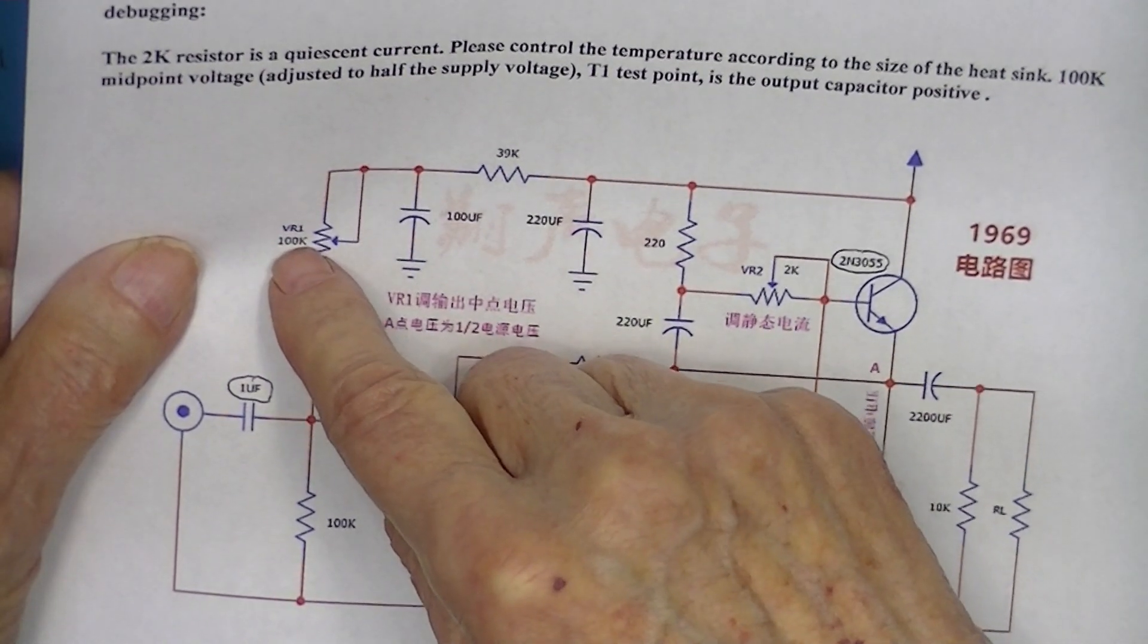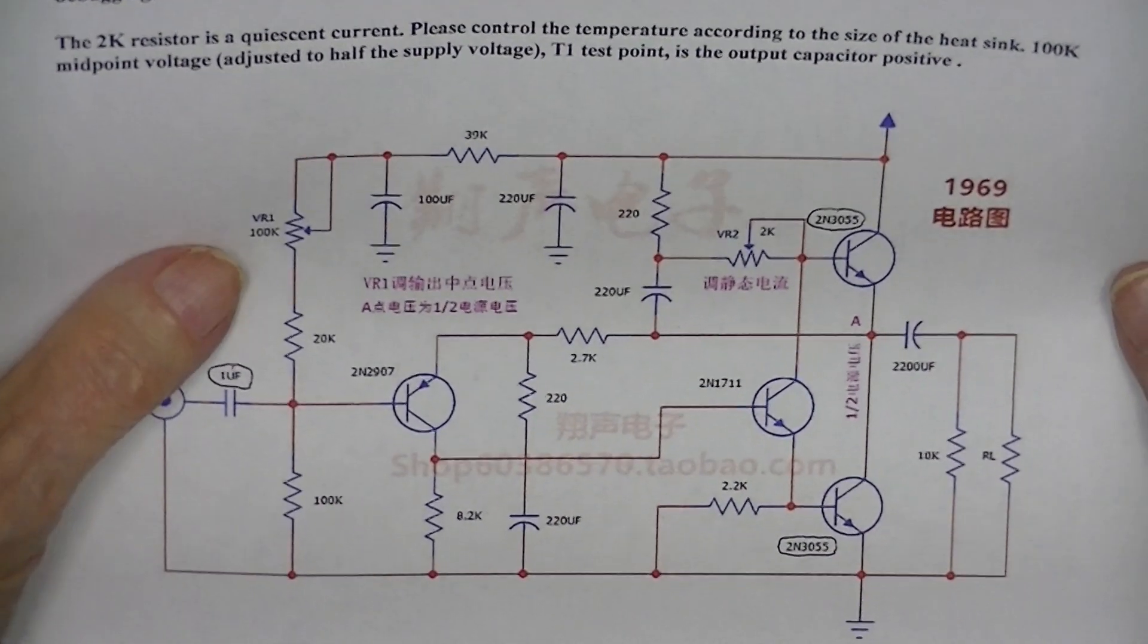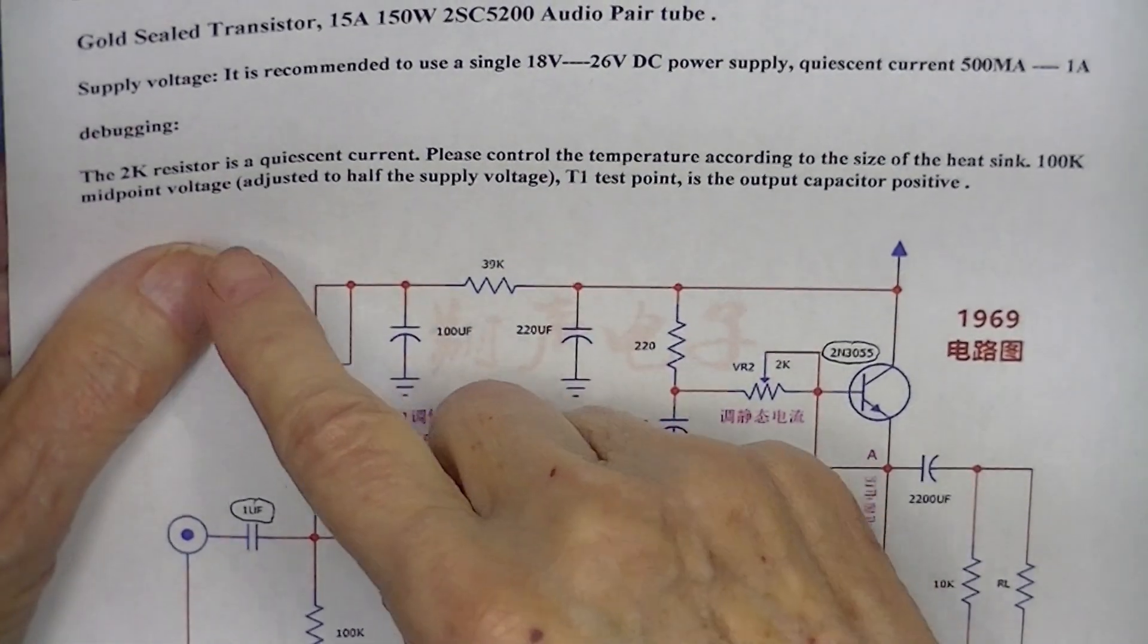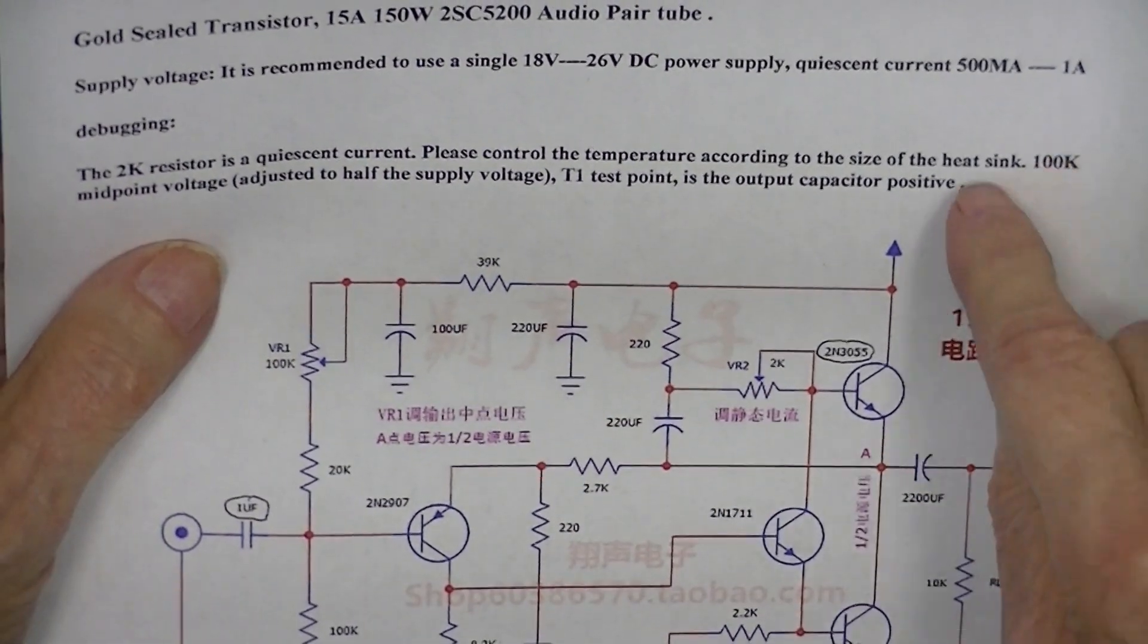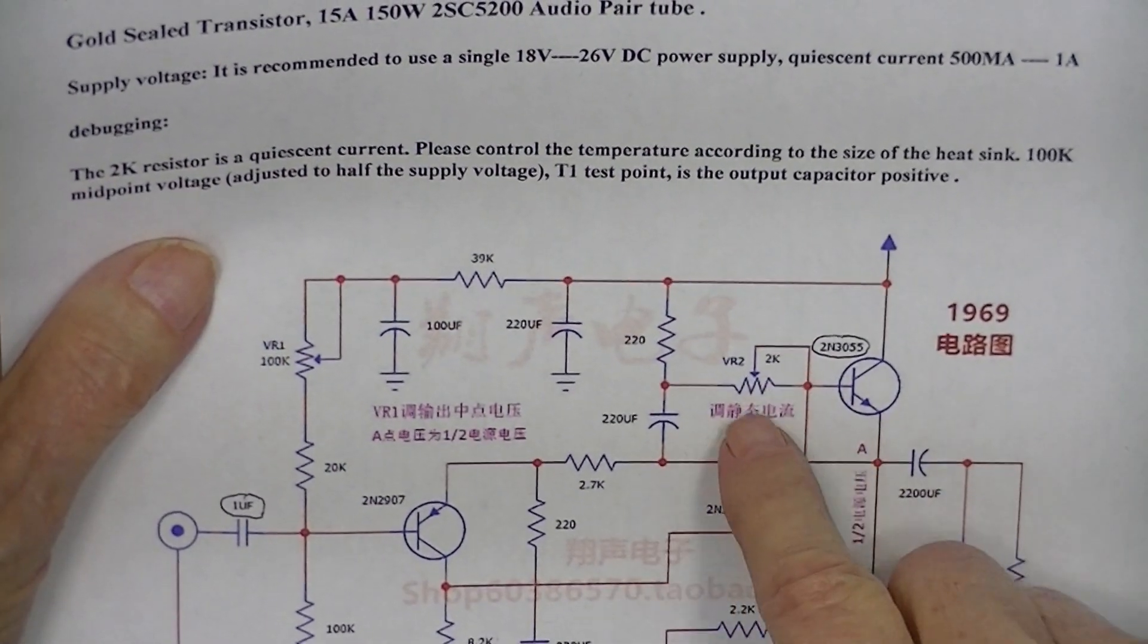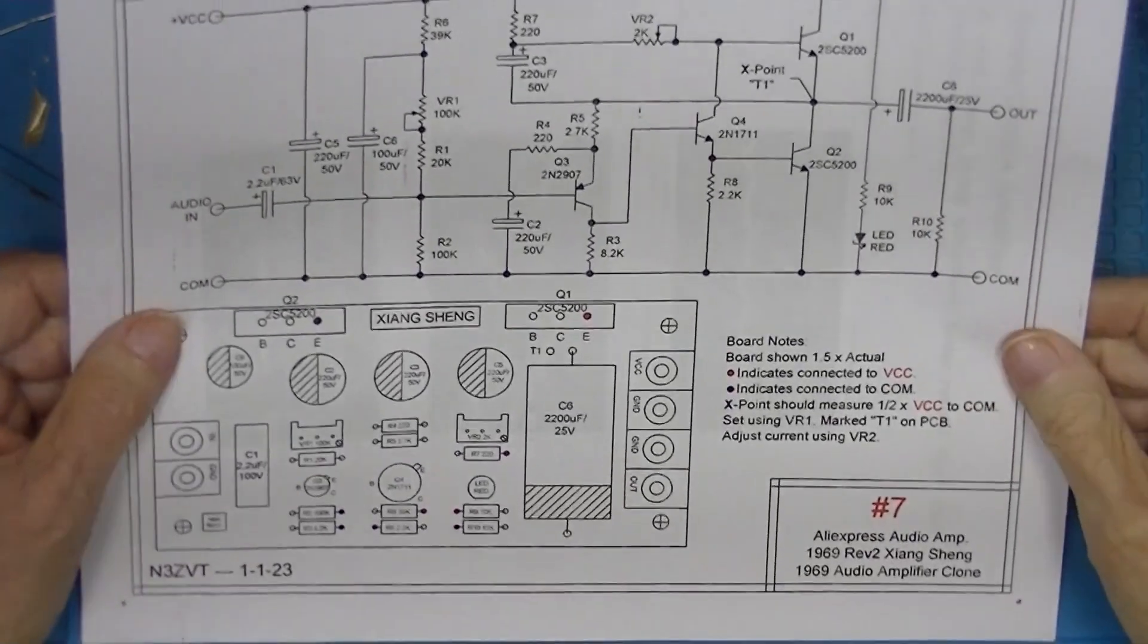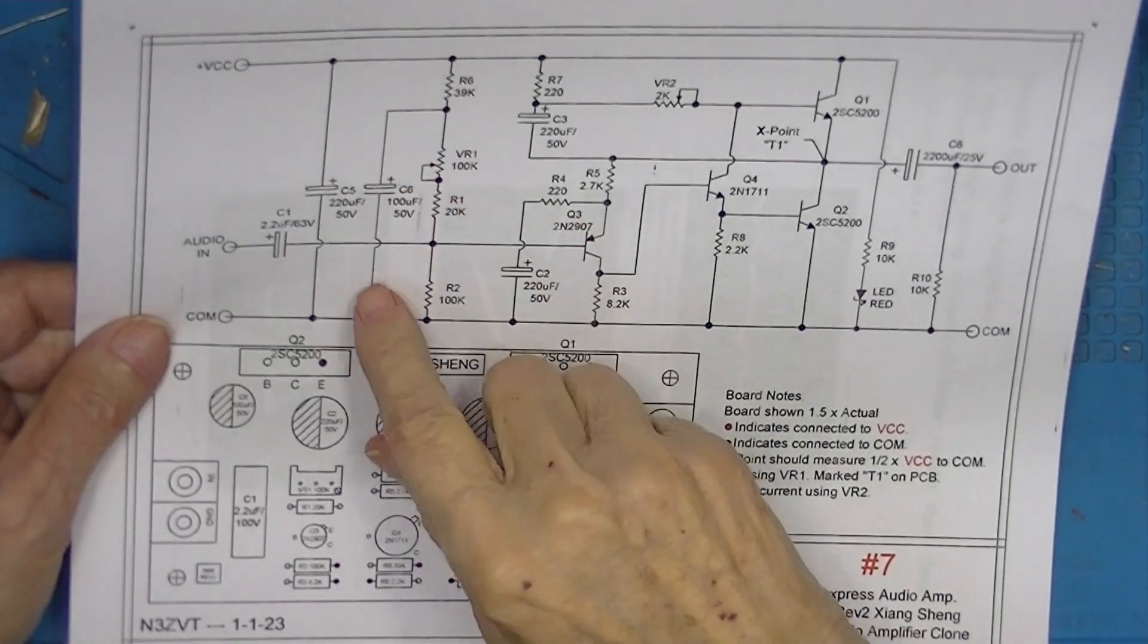That's accomplished by adjusting VR1. So VR1 adjusts this point, VR2 adjusts total current flow. The 2K resistor is a quiescent current, 100K is the midpoint voltage adjust. The midpoint is adjusted here.